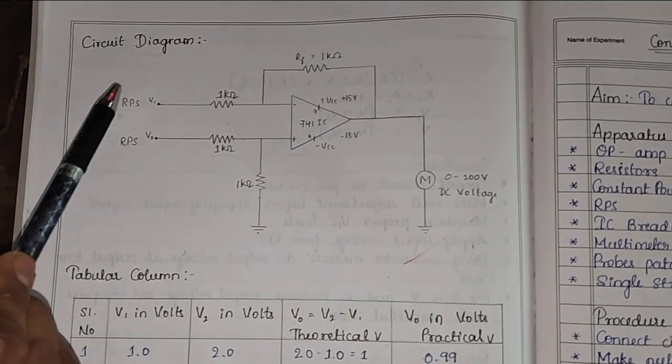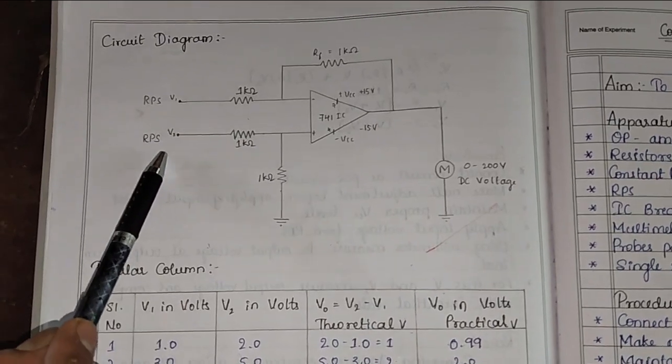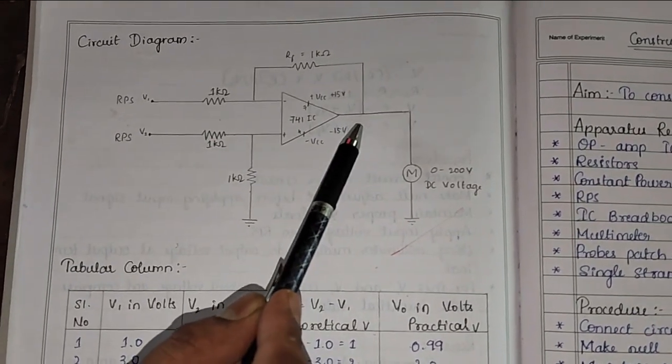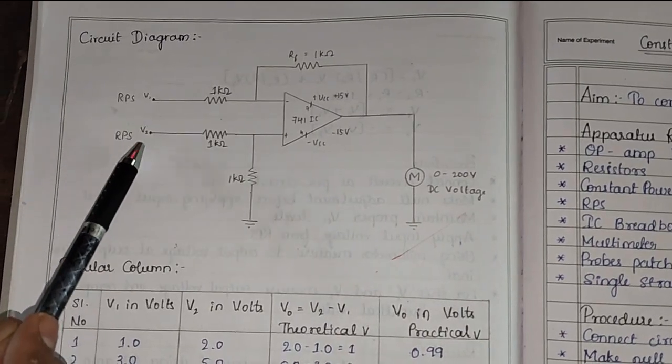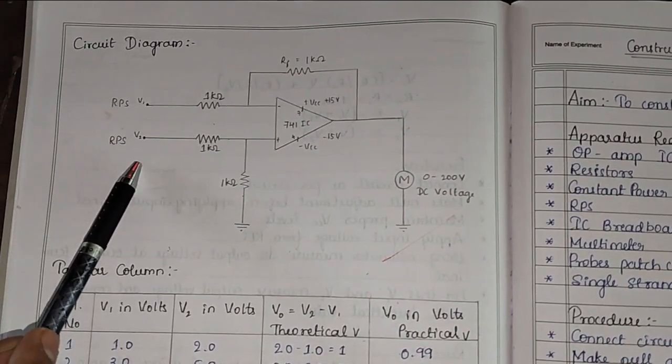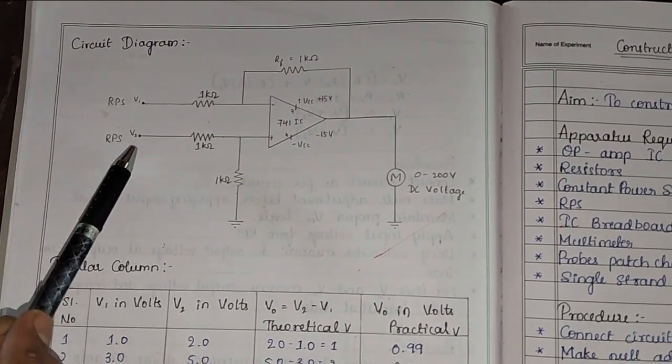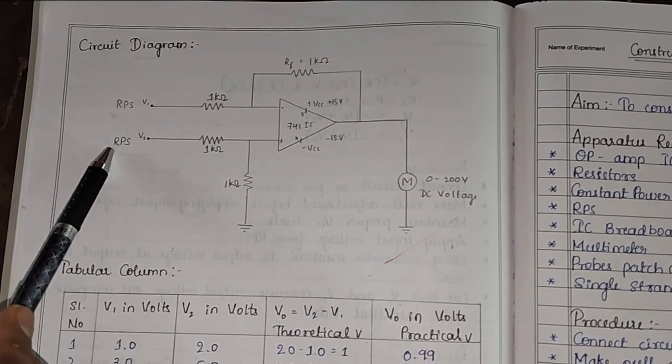Two DC voltages we apply at the input, that is V1 and V2, and output is observed at pin number 6 with the help of multimeter. We apply these voltages from regulated power supply.